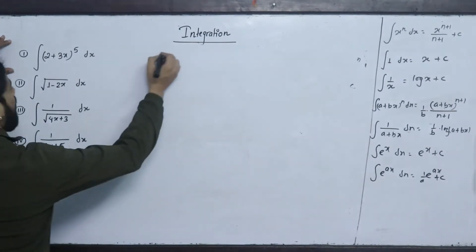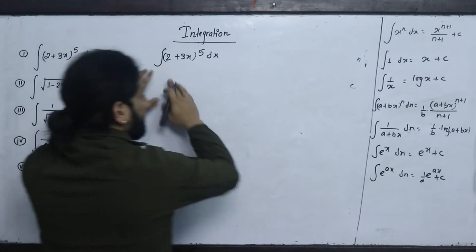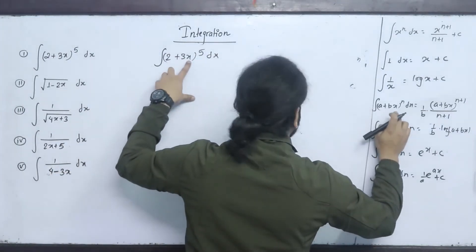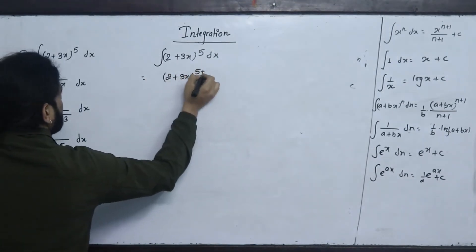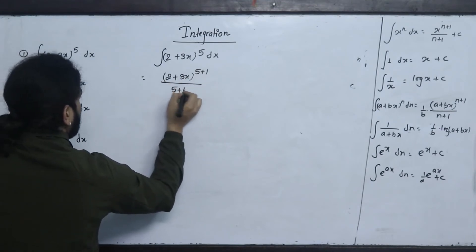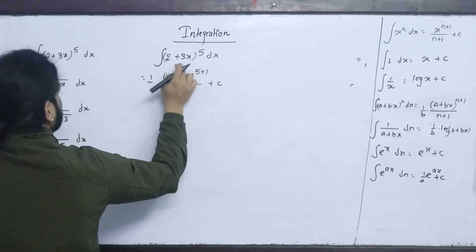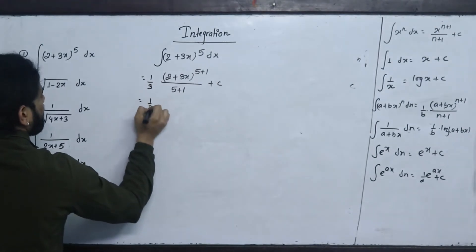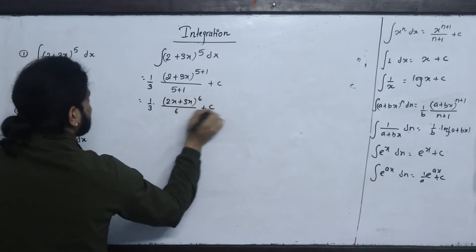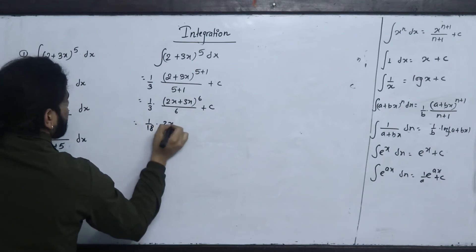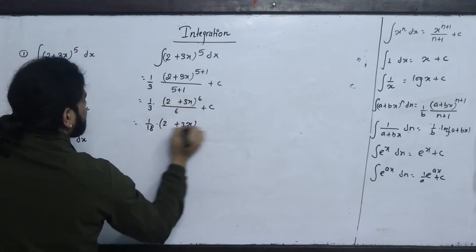Next question: ∫(2 + 3x)⁵ dx. Using the power rule for (a+bx)^n: (2+3x)^(5+1)/(5+1) × 1/3 + c = (2+3x)⁶/6 × 1/3 + c = (1/18)(2+3x)⁶ + c.